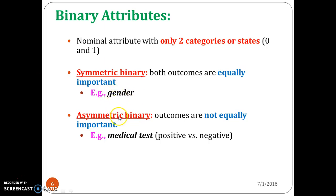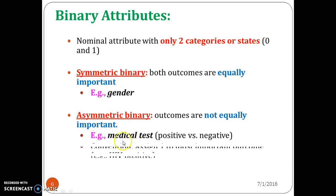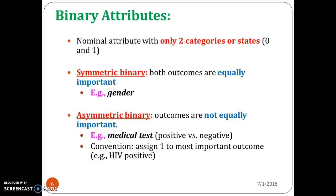Whereas you can consider a medical test as an example of an asymmetric binary attribute. When a person is subjected to an HIV test, the occurrence of HIV positive is very rare compared to HIV negative. If you test people, 90% or even 98–99% will have HIV negative.